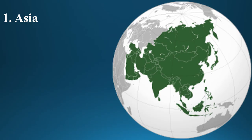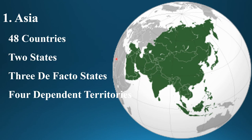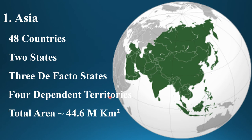Asia is the largest continent in the world. It has 48 countries and two limited but substantially international economic states — Palestine and Taiwan. There are three de facto states in Asia and four dependent territories. The total area of Asia is 44.6 million square kilometers.